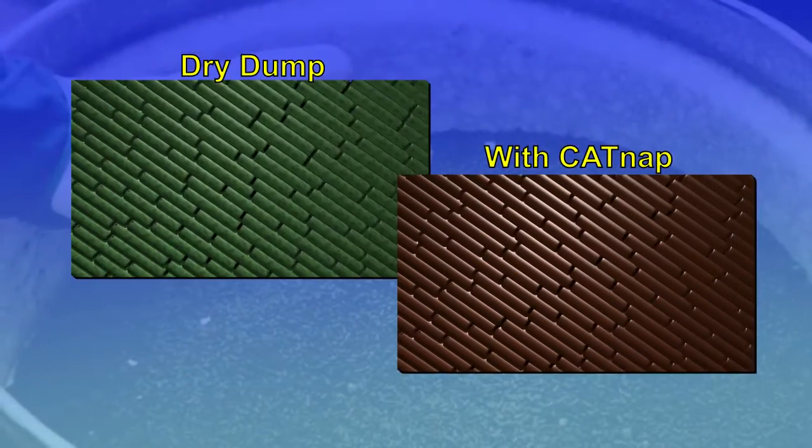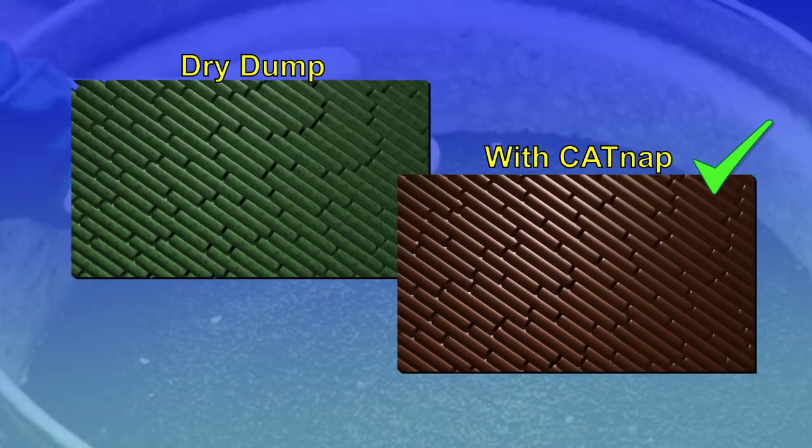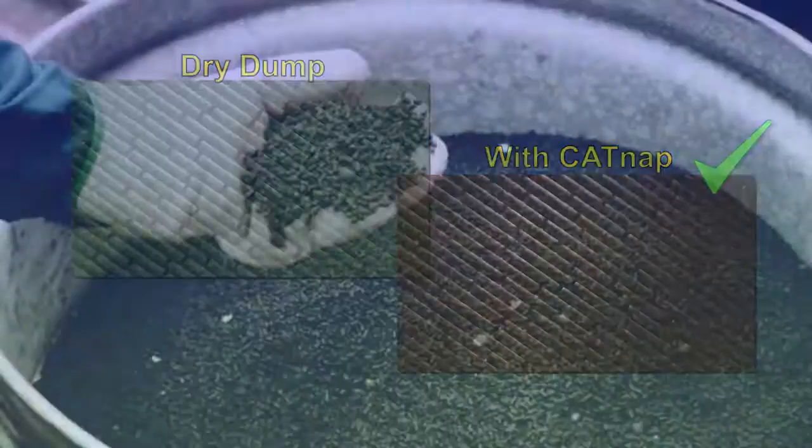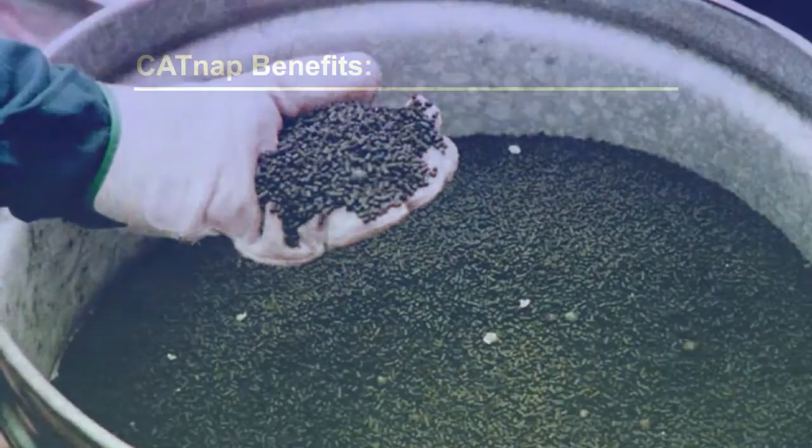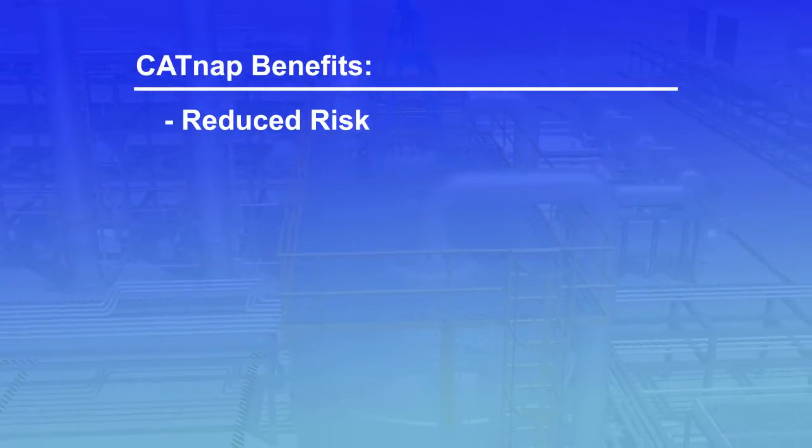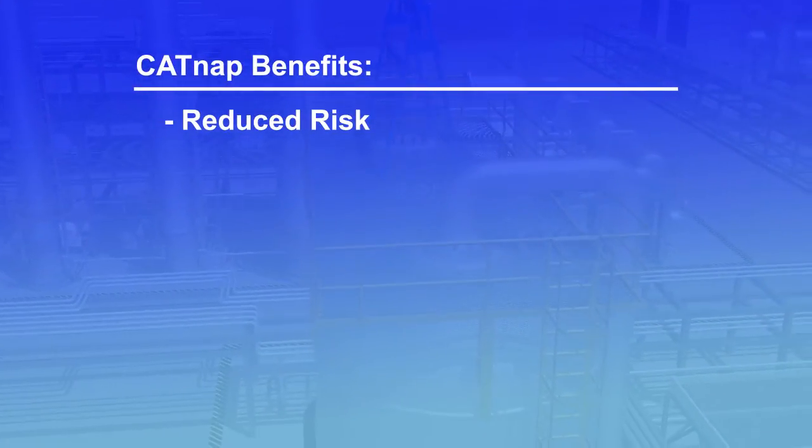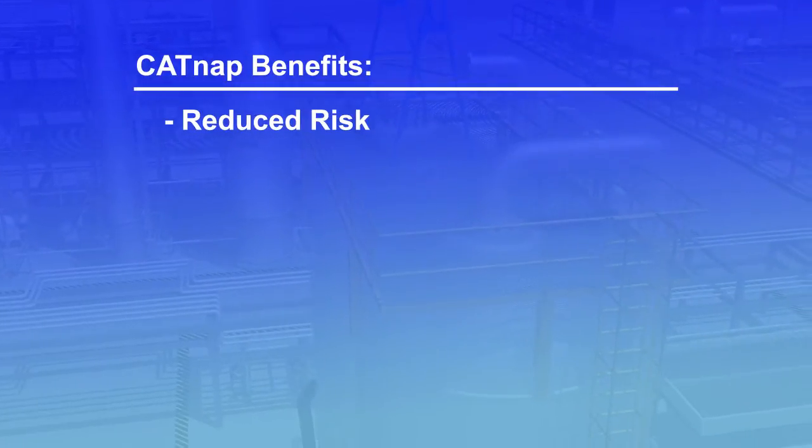CATNAP eliminates catalyst dust and fines and reduces attrition during catalyst removal and packaging. This results in a significantly reduced risk because the need for working in inert atmospheres is eliminated.